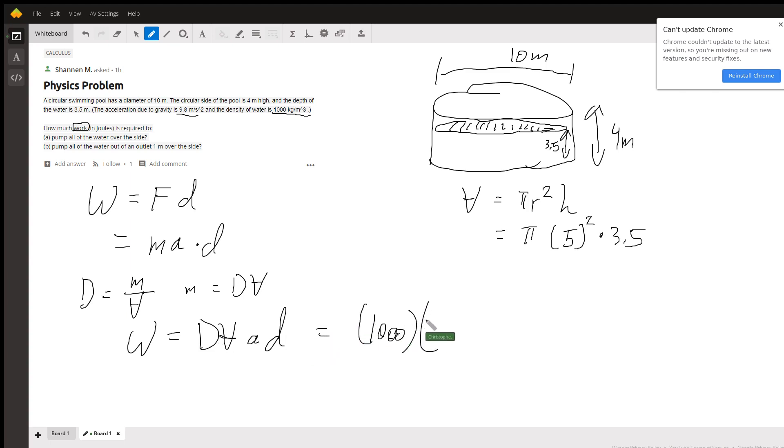We can plug in three of those variables very quickly. Density is being 1,000, volume is this hot mess, π times 25 times 3.5, acceleration, that's being 9.8, and now we're just left with filling out the distance.